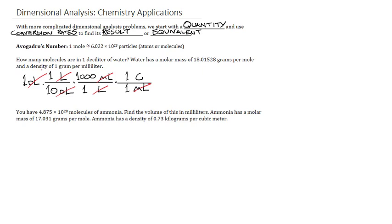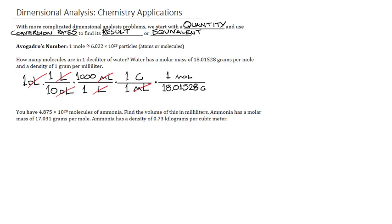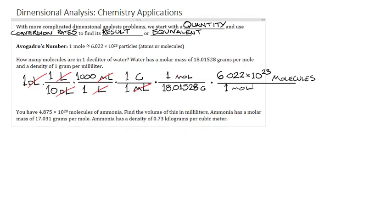Now we'll use the molar mass to figure out how many moles that is — dividing by 18.01528 to get the number of moles. Then finally, I'm going to change moles to molecules. Be careful here: make sure you write out the entire word 'molecules,' because molecules is not the same as moles. The abbreviation for moles is not the same as molecules, so be very careful not to confuse those. We see that the grams divide out and the moles divide out.